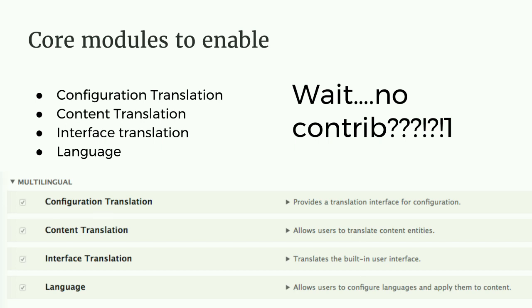Interface Translation — we'll walk you through how to use this tool later. This lets you translate all of the hard-coded text you might have around the site. And then the Language module, which allows you to add new languages. Notice I didn't mention any contrib dependencies. The great thing in Drupal 8 is that you don't need a ton of contrib modules like you did in the past. We've got everything in core that we need.